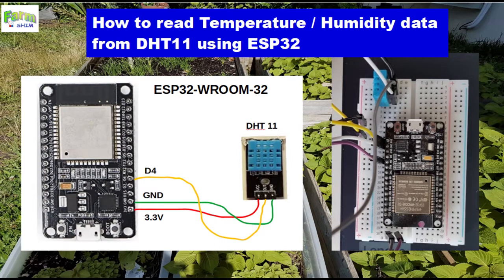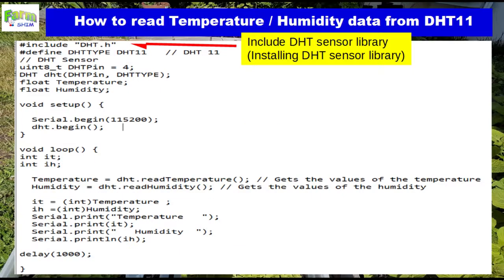Now I talk to you about how to read temperature and humidity data from DHT11 using the ESP32 module. Here I use ESP32 WROOM32, and the connection is shown in the images. Here is the test code. The function of the test code is to read data from DHT11 and send the data to PC through USB cable every 1 second. I can then monitor the data in the serial monitor window of Arduino IDE. At first I have to include the library file.